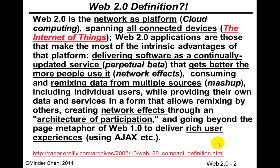Let's look at Tim O'Reilly's definition. Web 2.0 considers the whole network as the platform. Our computing platform is not limited to a standalone desktop computer — it's not just your laptop or mobile device, but also a lot of online resources on the web, which is sometimes referred to as cloud computing. All devices are connected to the web, sometimes referred to as the Internet of Things, with a lot of connected sensors.